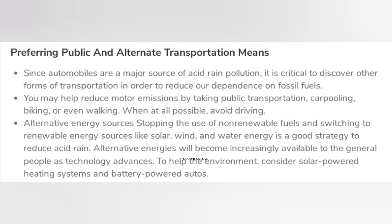Stopping the use of non-renewable fuels and switching to renewable energy sources like solar, wind, and water energy is a good strategy to reduce acid rain. Alternative energies will become increasingly available to the general public as technology advances. To help the environment, consider solar-powered heating systems and battery-powered autos.